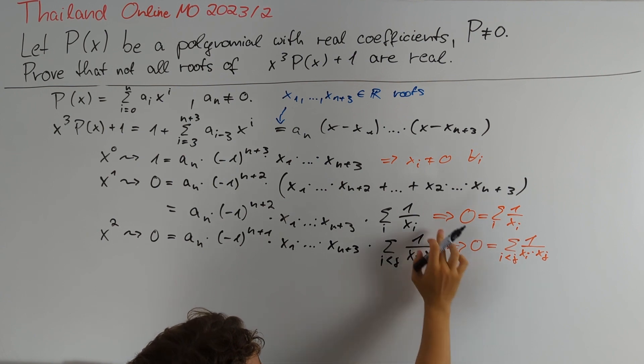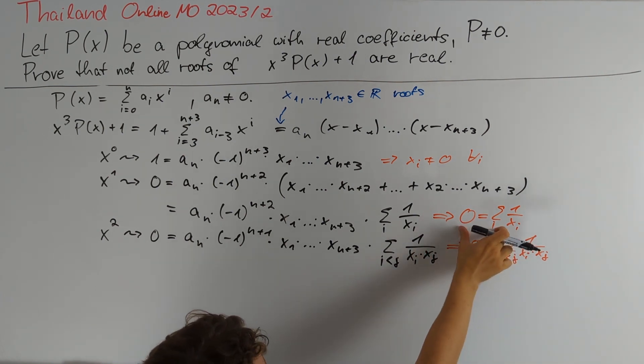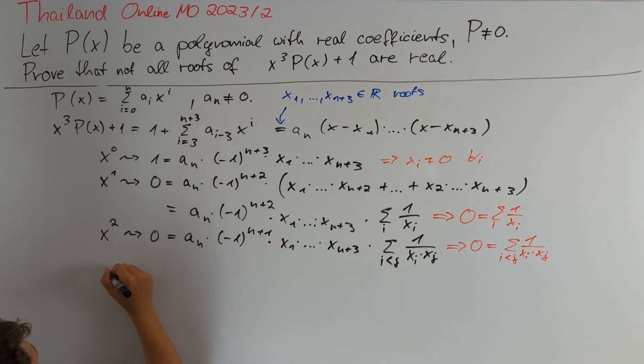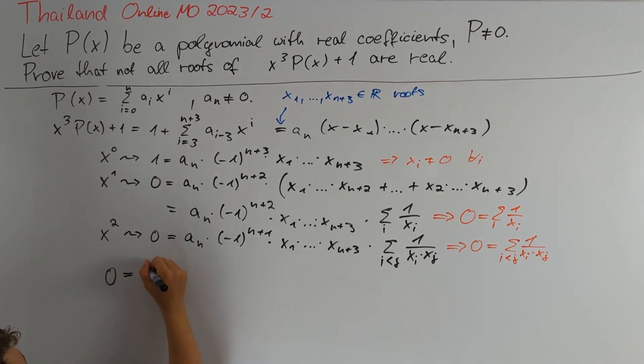To finish, we want to use these two equations. So let's begin with squaring the first one and we obtain that 0 is the square of the sum over all indices i of 1 divided by xᵢ.